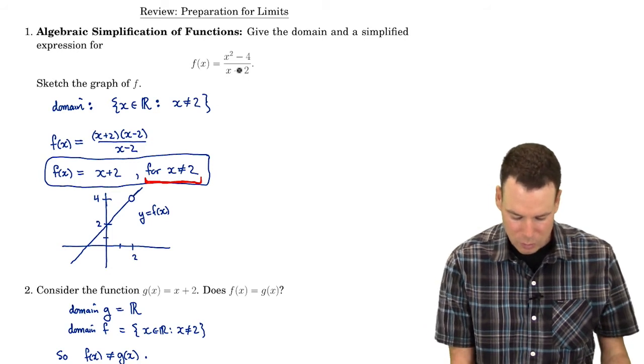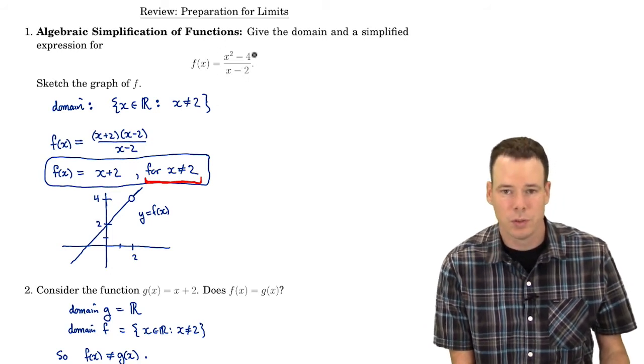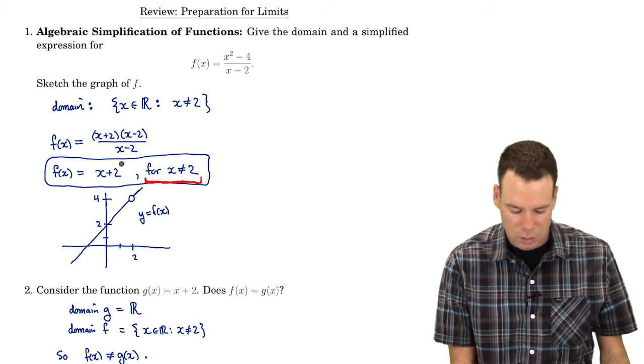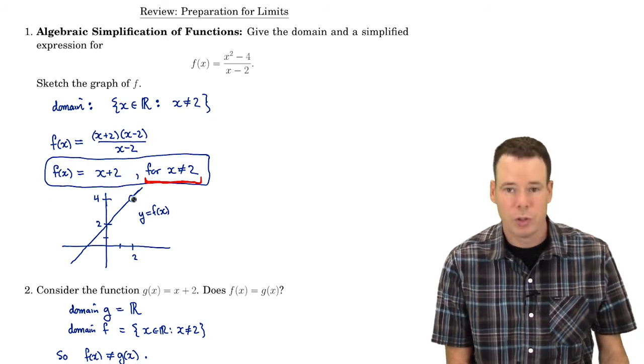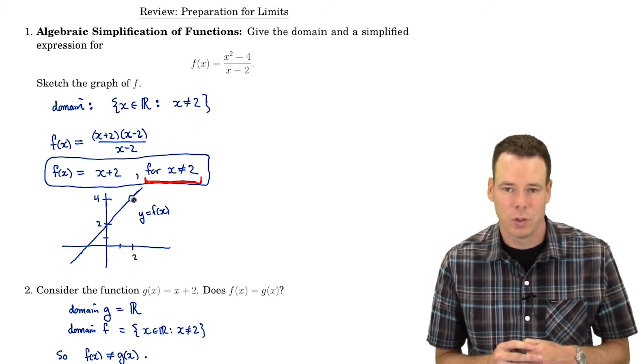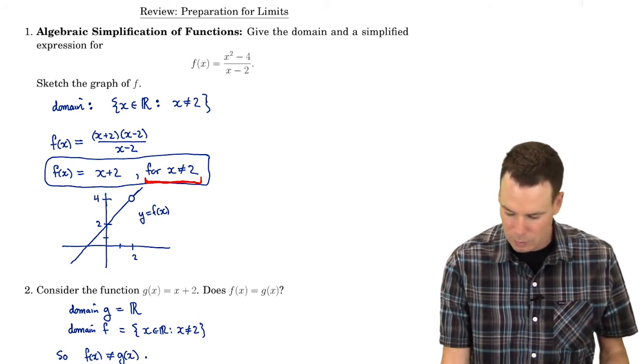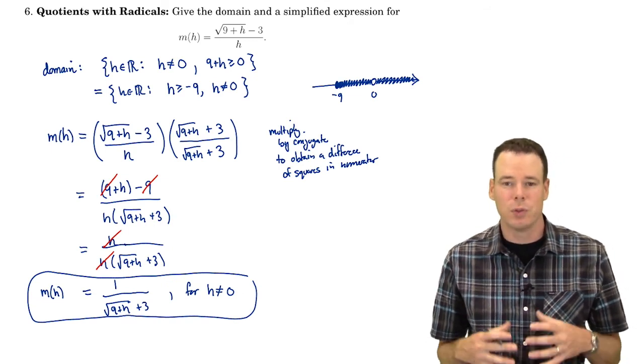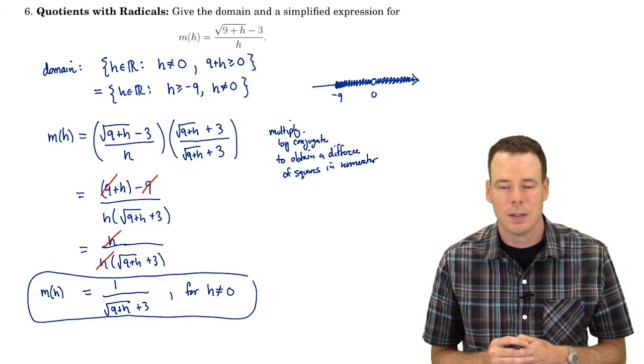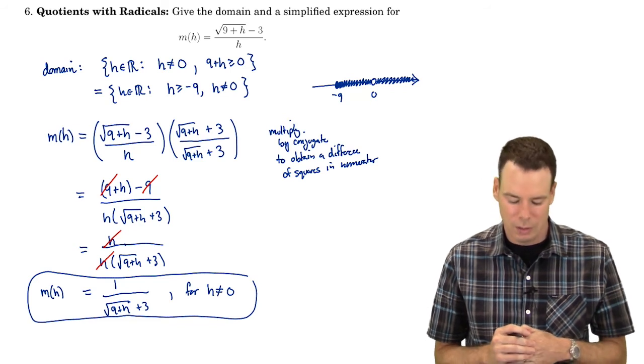Our simplified function allowed us to get information about our original function near the points that weren't in the domain. In some sense we're able to take our original function which had some holes in them and produce new simplified expressions for which we're able to determine what the height of those holes were. Okay so that's our real goal. That's the kind of usefulness that we'll need in doing limit problems in a little bit.